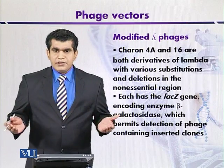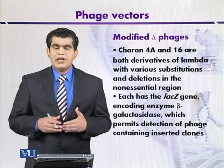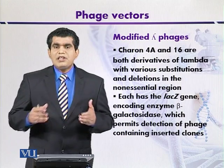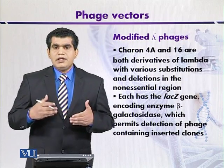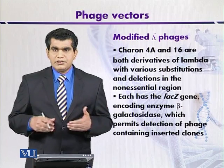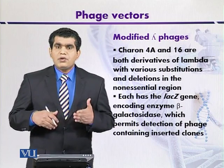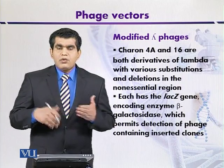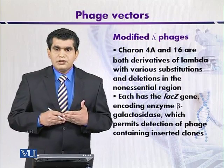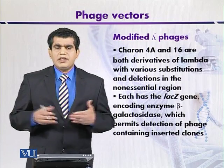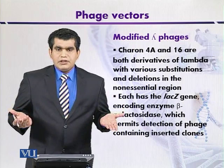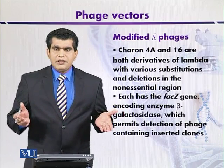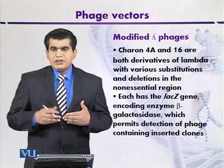Modified lambda phages like Charon 4A and Charon 16 can be effectively used as cloning vectors. The multiple cloning sites have been removed by either substitution, addition, or deletion. In addition, they also contain a reporter gene encoding beta-galactosidase. If this enzyme is produced after the insertion of foreign DNA, then the foreign DNA has not been successfully inserted. If insertion has occurred, the expression of beta-galactosidase is inactivated, indicating the presence of foreign DNA.